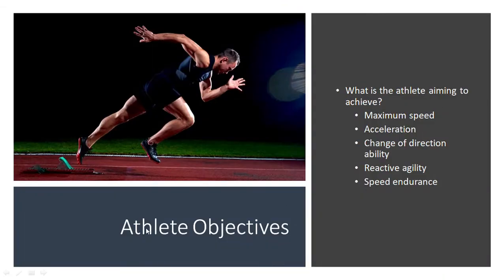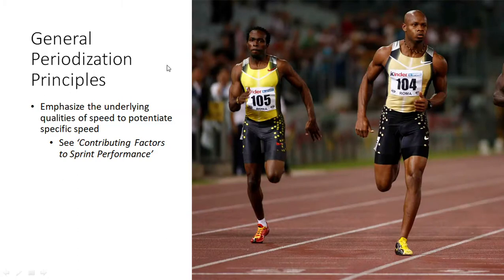The first thing we need to understand is what the athlete's objectives are — what does this athlete actually aim to achieve to be at their peak performance for their sport? Do they need to run really fast, so maximum speed in a straight line? Do they need to accelerate well, change direction well, or have reactive agility, characteristic of team sports? Or are they more of a 400 to 800 meter runner needing speed endurance? Once we've established that, we can start developing some periodization principles.